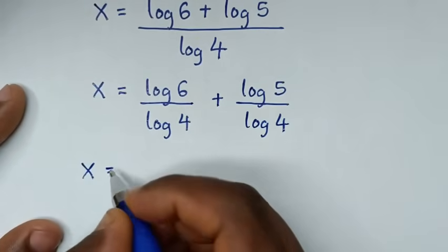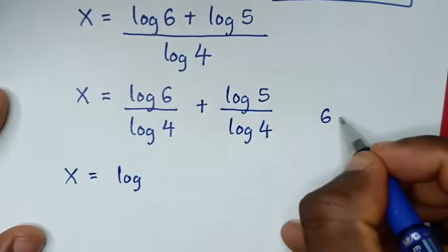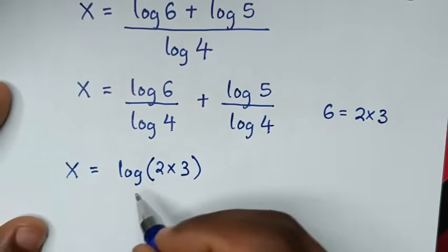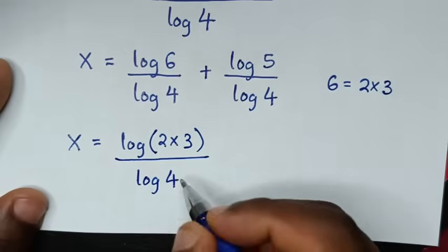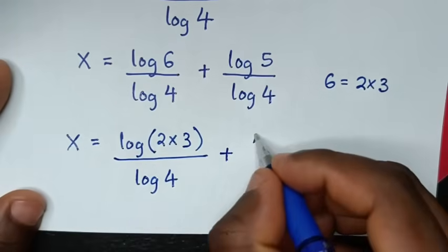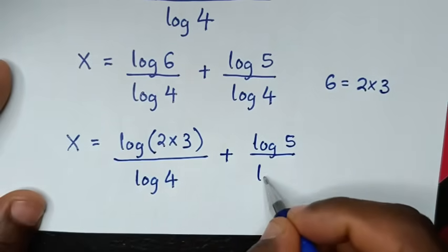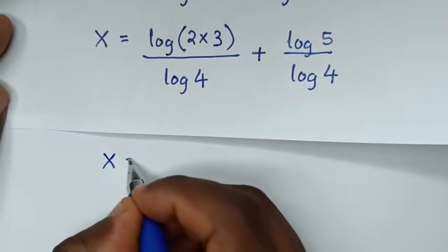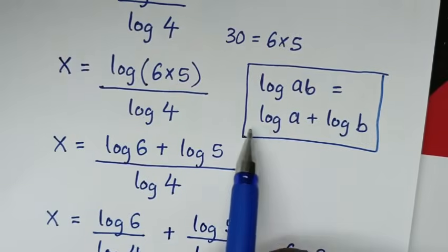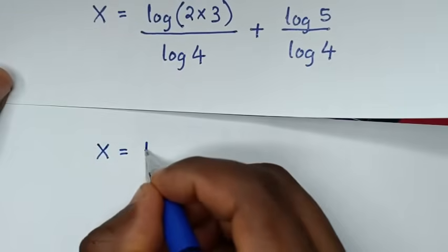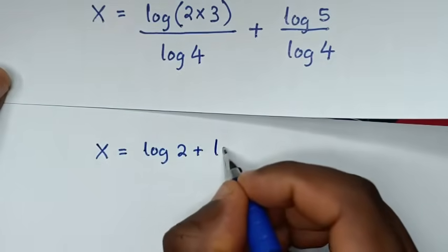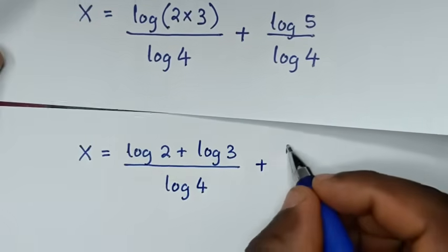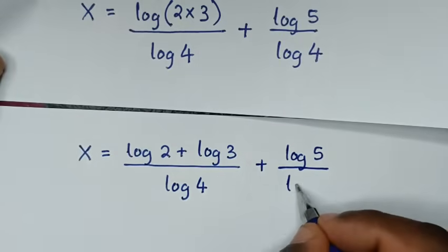Then it will be x is equal to log of 6 over log of 4 plus log of 5 over log of 4. From 6: 6 is equal to 2 times 3, so log of 6 is log of (2 times 3), over log of 4, plus log of 5 over log of 4. Applying the product rule, log of 2 times 3 becomes log of 2 plus log of 3, so it is (log 2 + log 3) over log 4, plus log of 5 over log of 4.